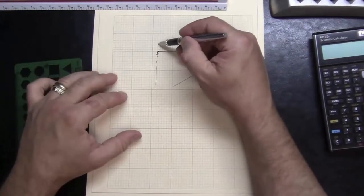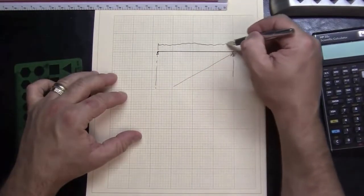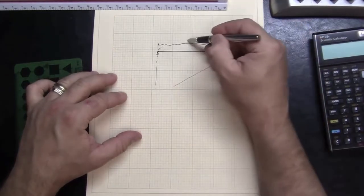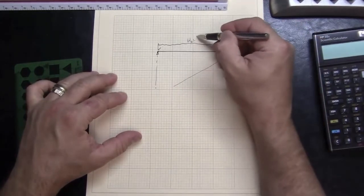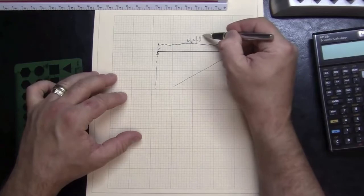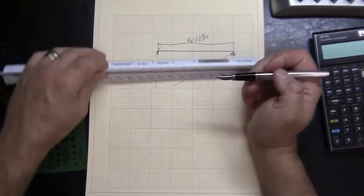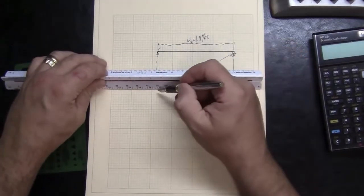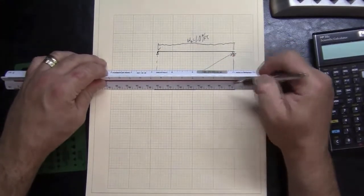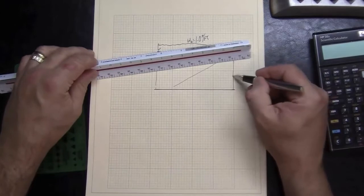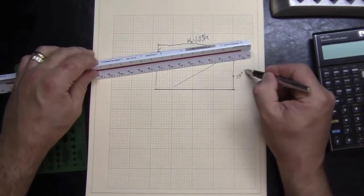And again, we had an ultimate load of one kip per foot, which would give us a shear diagram of 15 kips.